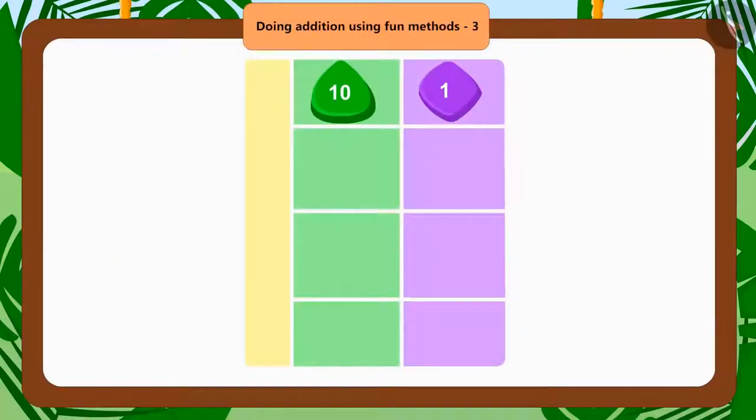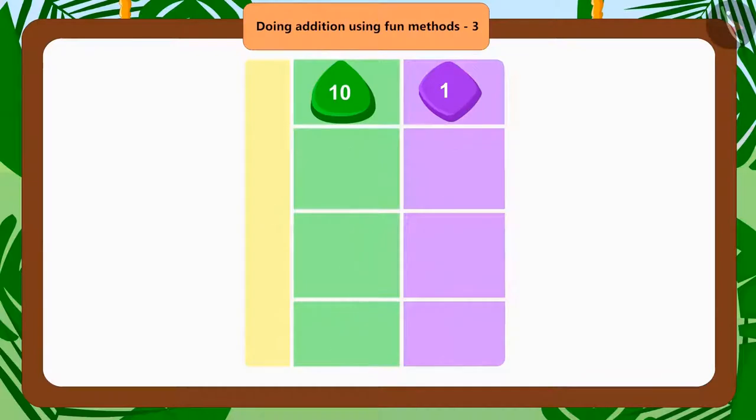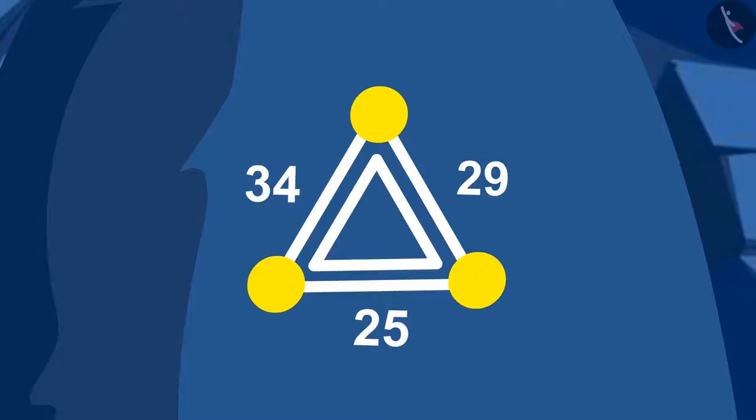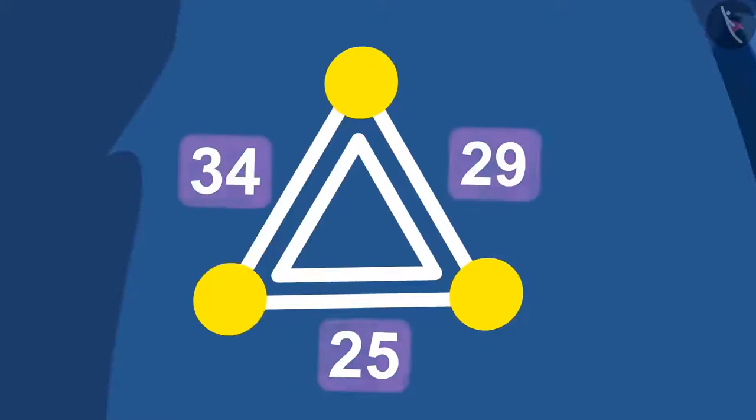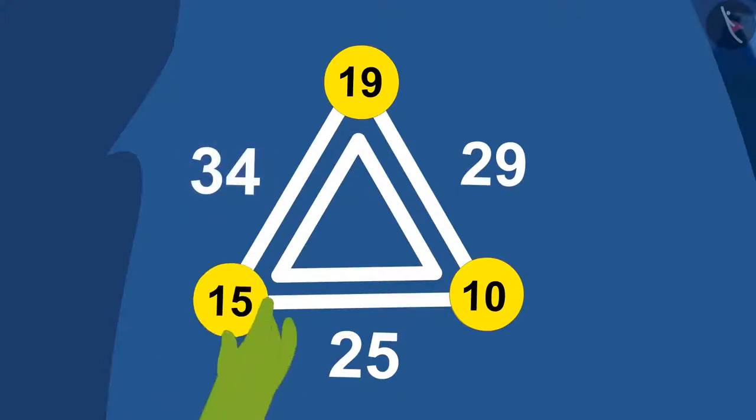Tufan began to find an answer to the puzzle. First, he added 19 and 10. He got 29. Then he added 15 to 19 and got 34. Now, Tufan saw the numbers written on the side of the triangle. He noticed that on the side on which the number is 29, he can put the numbers 10 and 19 on two corners. And the side which has the number 34 written, he can put the numbers 19 and 15. In this way, Tufan put all the numbers in their correct places.